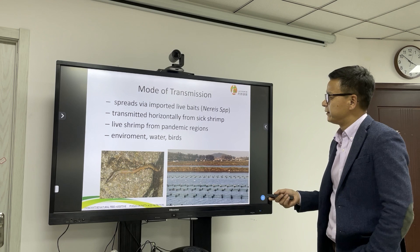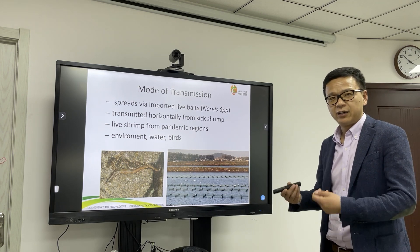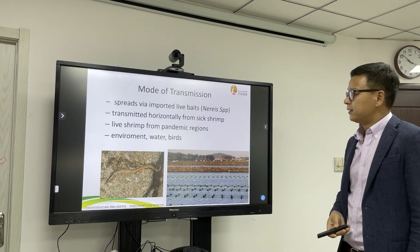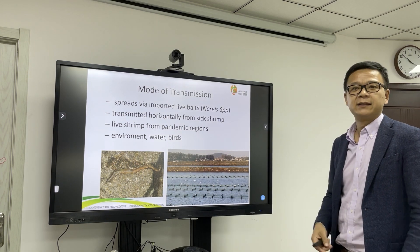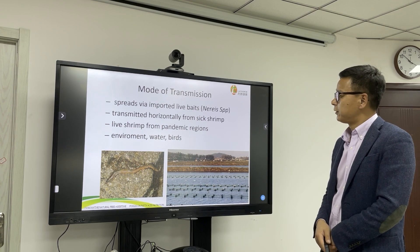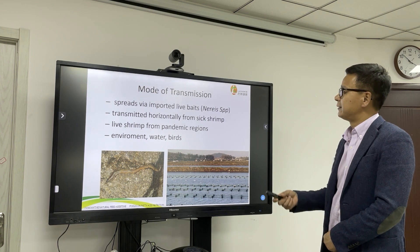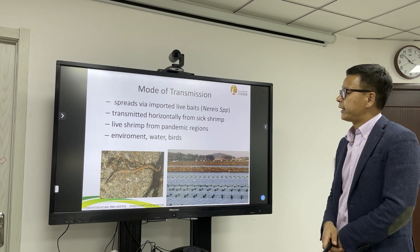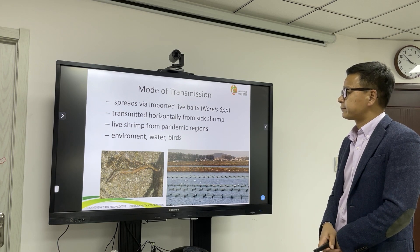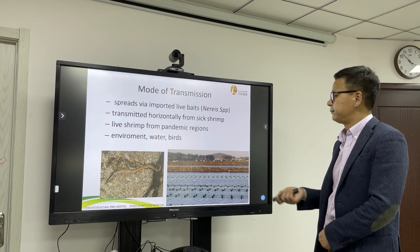Regarding modes of transmission: EHP can spread through imported live feeds. A lot of broodstock are affected, which indirectly contaminates the broodstock supply. EHP can also be transmitted horizontally — healthy shrimp engaging in cannibalism with sick shrimp will become infected. Live shrimp from pandemic regions can also affect the environment, and water birds in some areas also carry EHP.